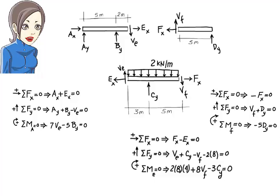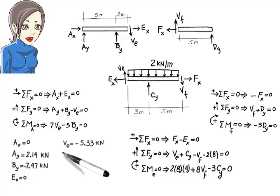Solving these equations simultaneously, we get AX equals 0, AY equals 2.14, BY equals negative 7.47, EX equals 0, VE equals negative 5.33, CY equals 21.33, FX equals 0, VF equals 0, and DY equals 0.